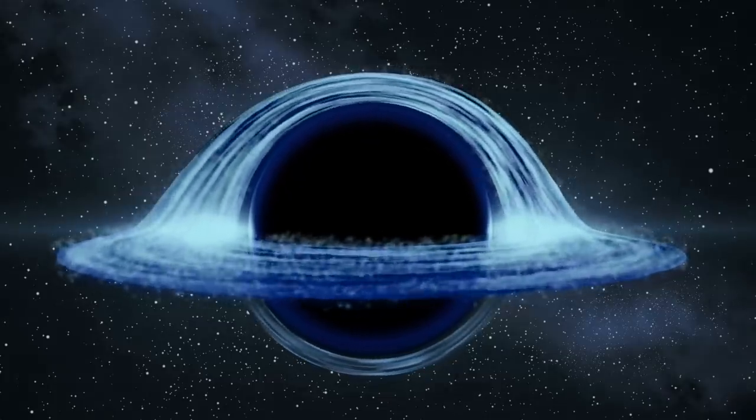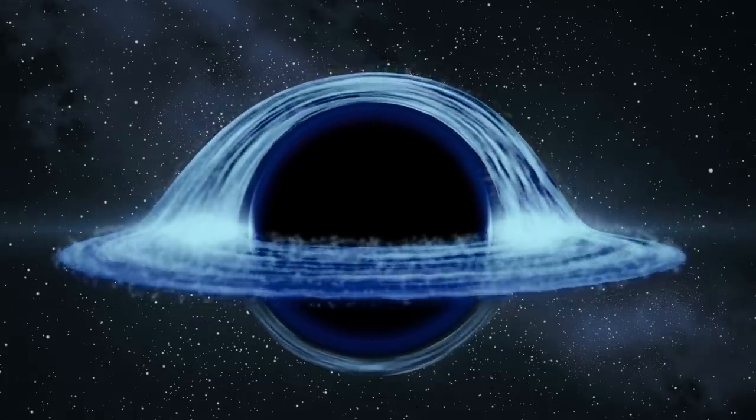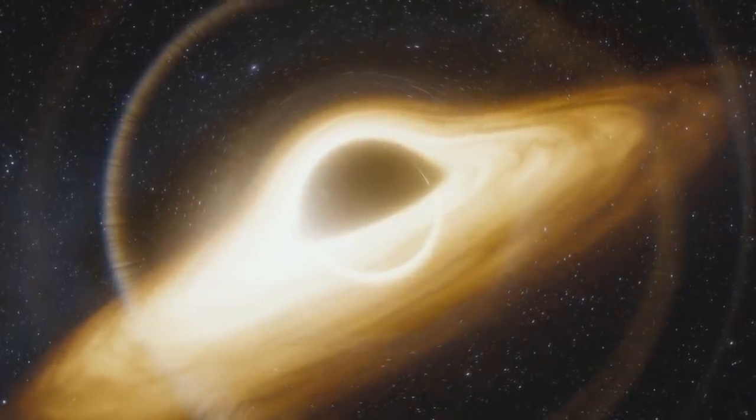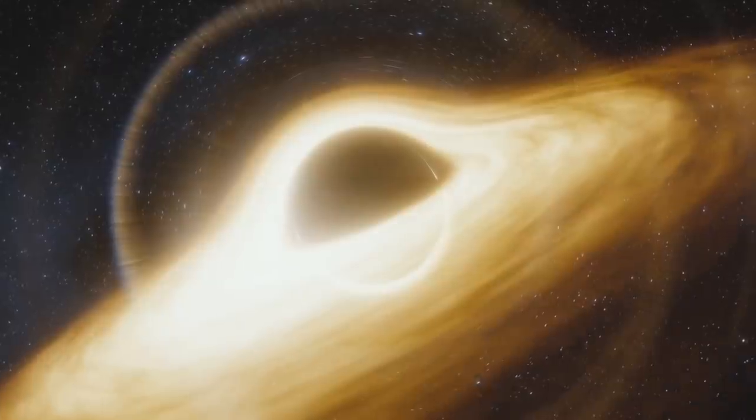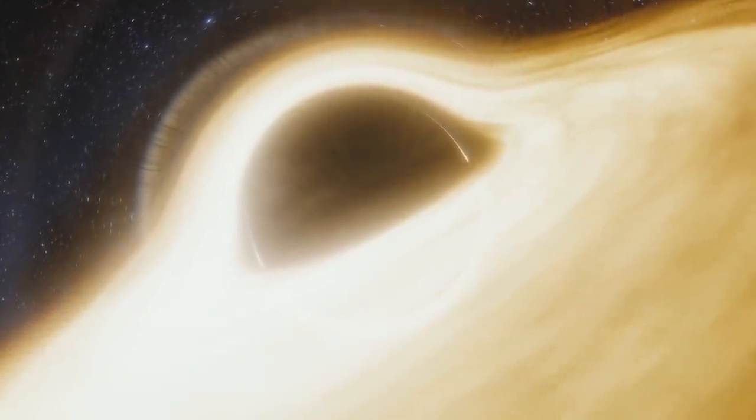Besides the mass difference between these two types of black holes, what also differentiates them is the distance from their center to their event horizon, a measure called radial distance. The event horizon of a black hole is the point of no return. Anything that passes this point will be swallowed by the black hole and forever vanish from our known universe.